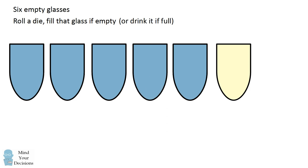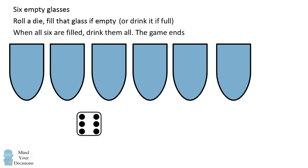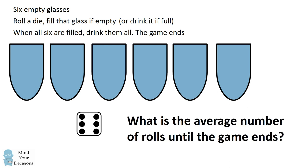At some point we might have 5 glasses that are full. If we roll a number for the empty glass, then we're going to fill that glass and we have to drink all 6 glasses — at this point the game ends. The question is: starting from the beginning of the game, what is the average number of rolls until the game ends?